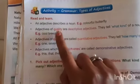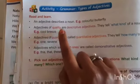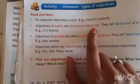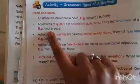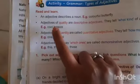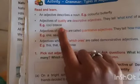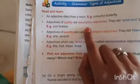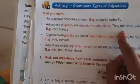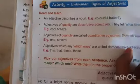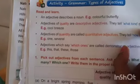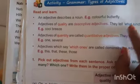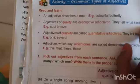Adjectives of quality are called descriptive adjectives. They describe the quality of a noun. For example, 'cool breeze' — what kind of breeze? Cool. It tells the quality of the breeze. Descriptive adjectives tell what kind of a person, place, animal, or thing it is.